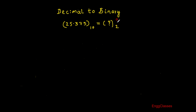First let me consider the integer part, which is 25. I would divide this number successively by 2 till I cannot divide it any further — that is the method for the integer part. For the fractional part, later I would consider 0.375 and multiply this number successively by 2.